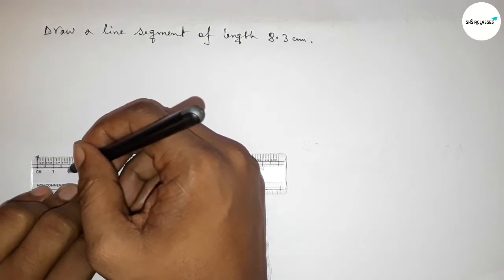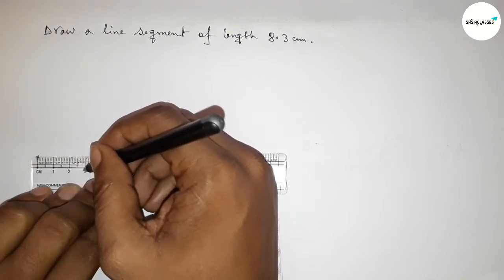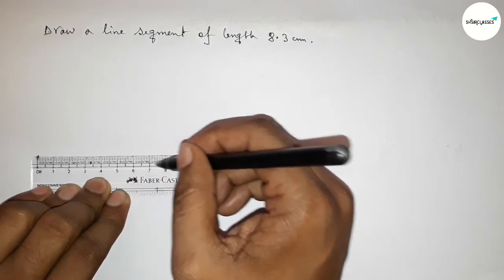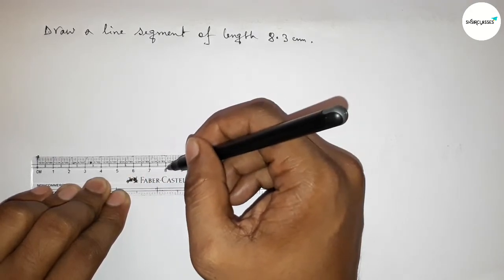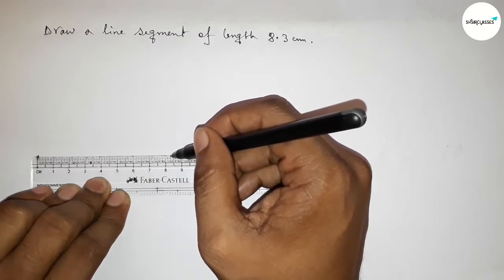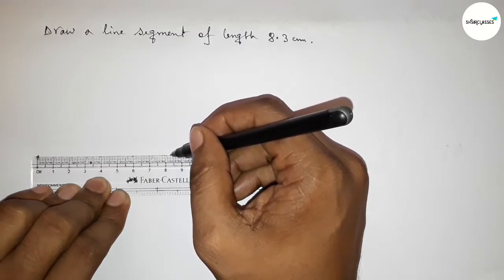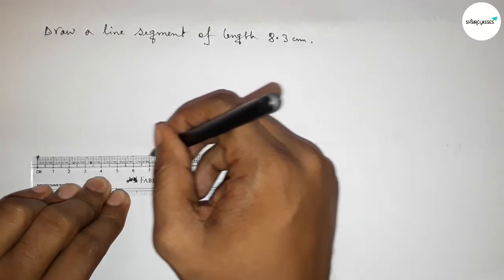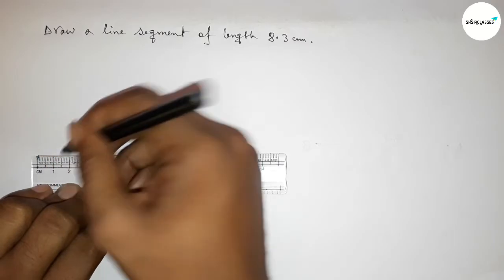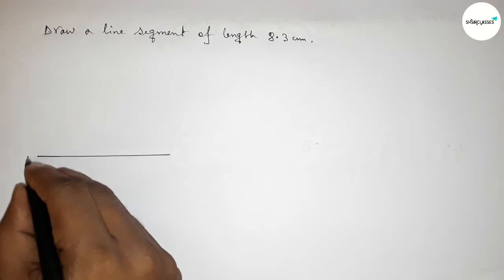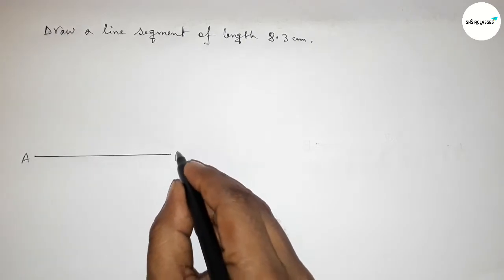Now counting: 1, 2, 3, 4, 5, 6, 7, 8 — so this is 8. And 8.1, 8.2, 8.3 — so this is 8.3. After 8, we count three extra millimeter marks, giving us 8.3 centimeters length perfectly.